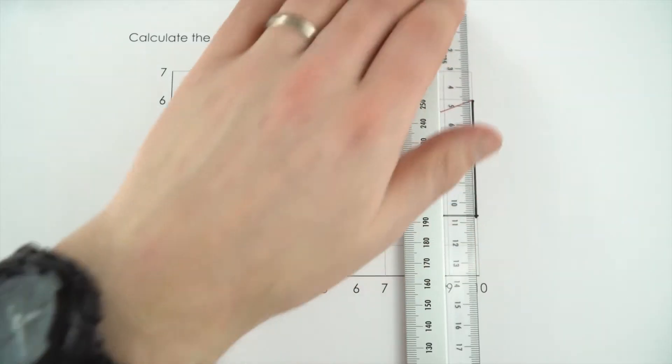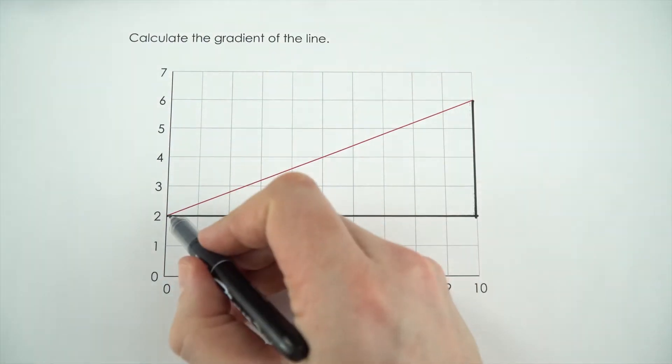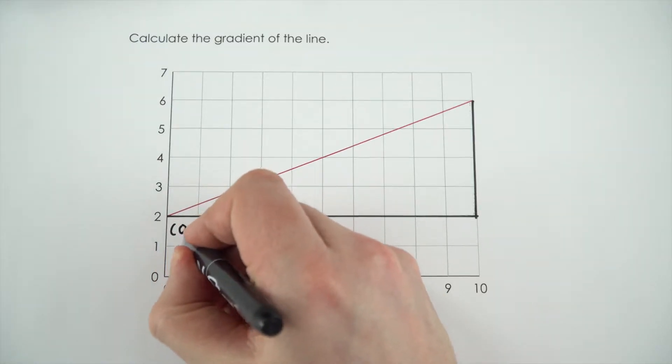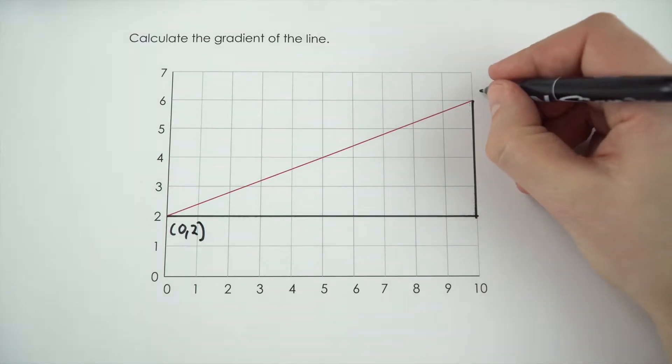And then what I can then do is I can read off the values at this point and this point. Now down here we've got a value of x equals 0 when y is equal to 2. I'm just going to put that down there. And at this point up here x is equal to 10 when y is equal to 6.